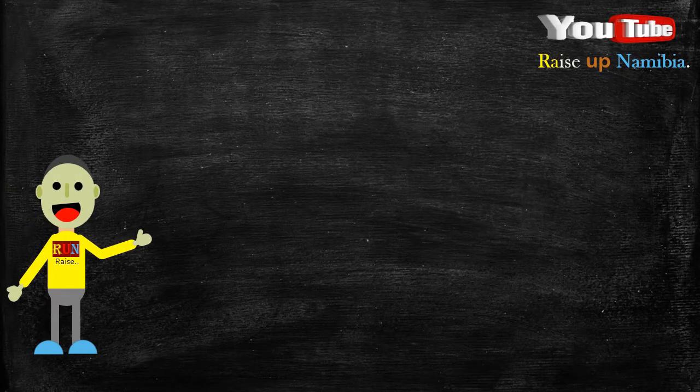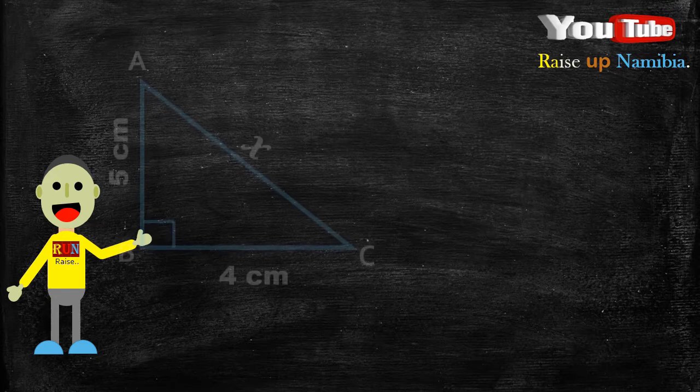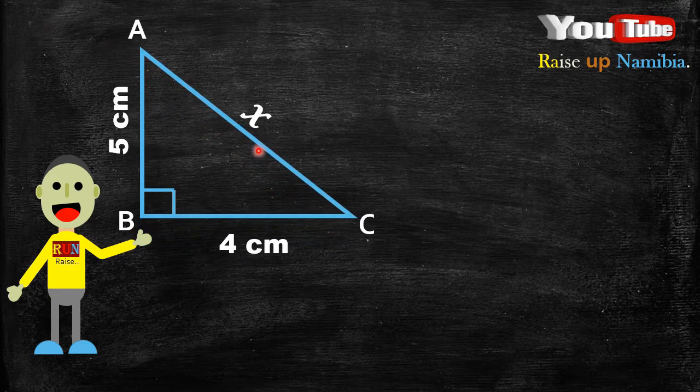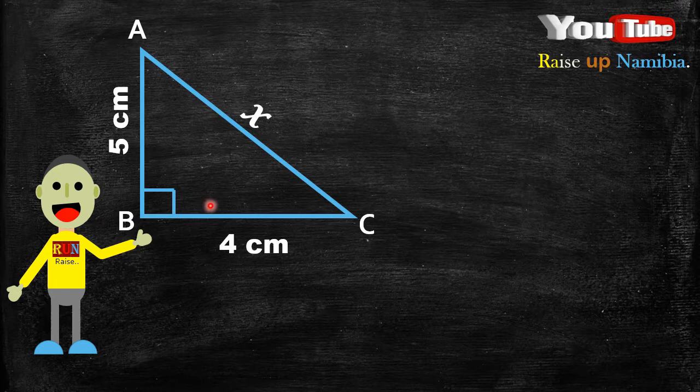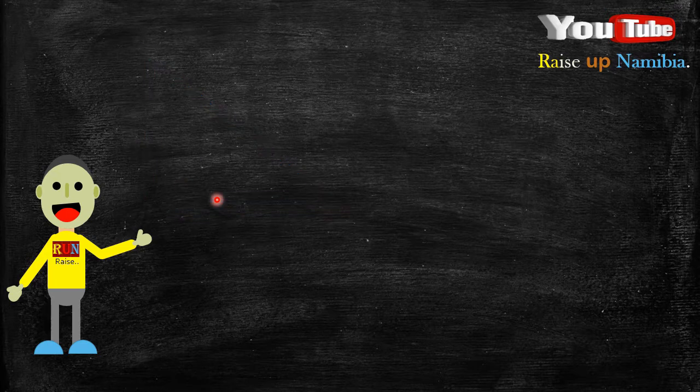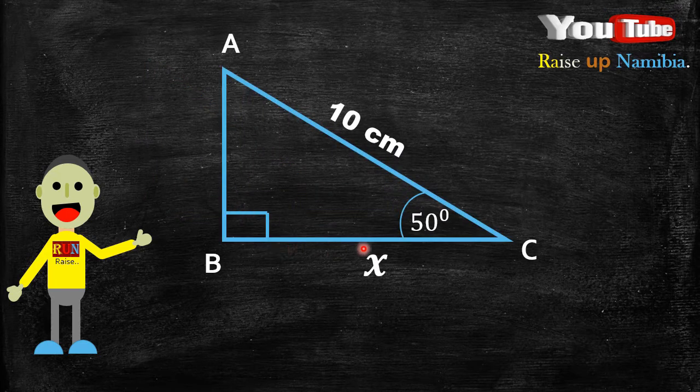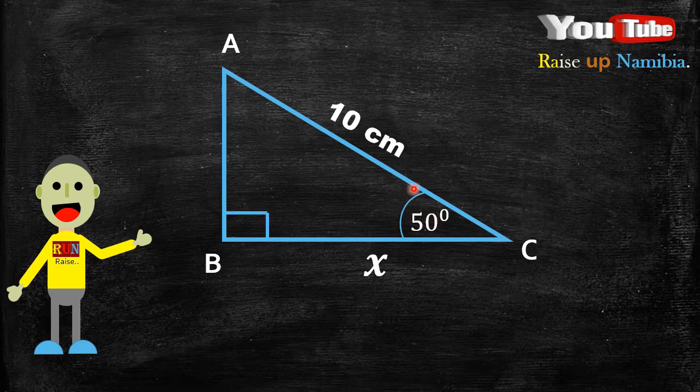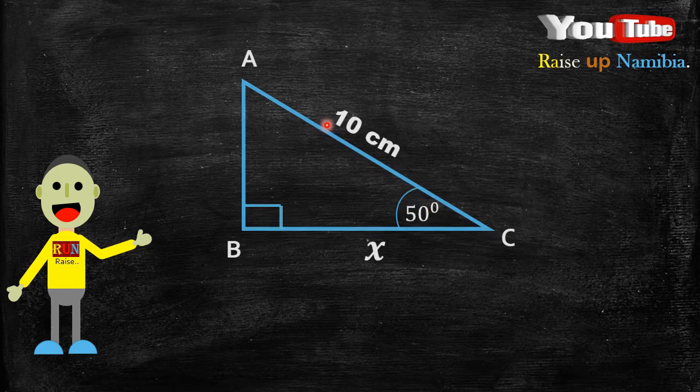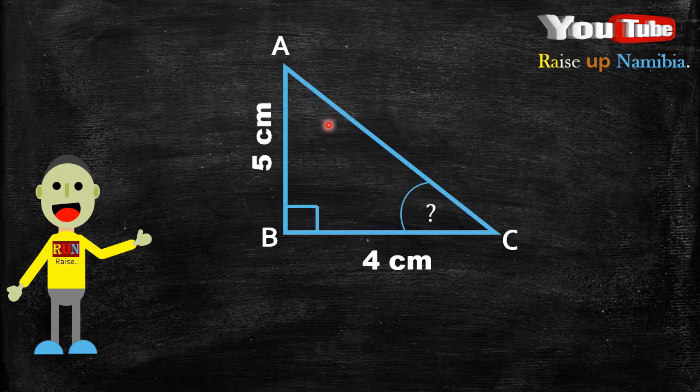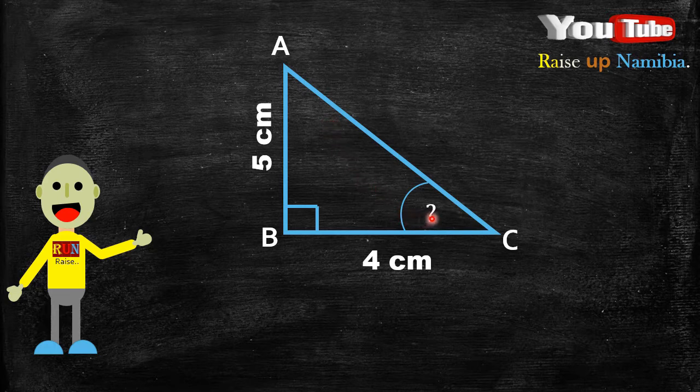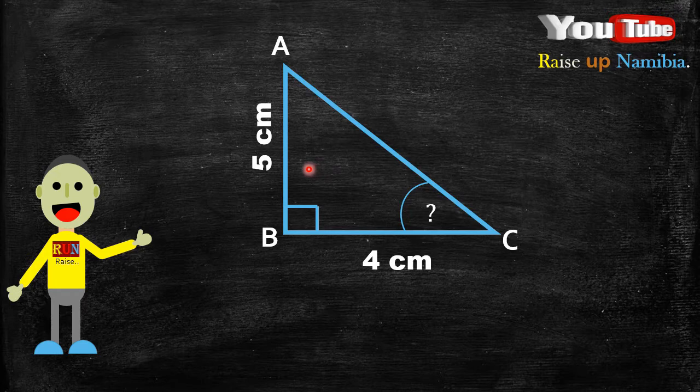Hey there! In the previous videos we spoke about how to find one side of a triangle when you are given two sides, and in part 2 we spoke about how to find one side when you are given one angle and one side. Now in this video we are going to be looking at how to find the angle when you are given two sides of a triangle.